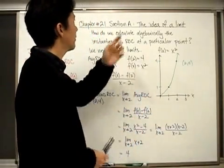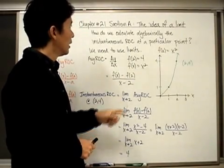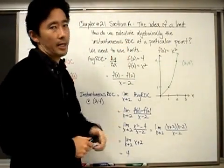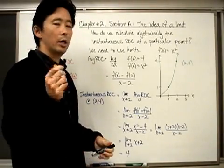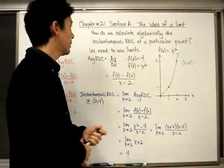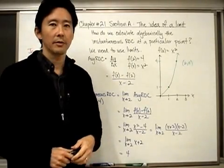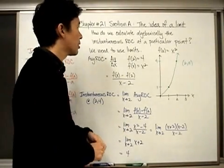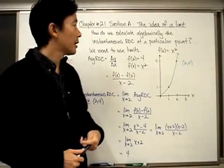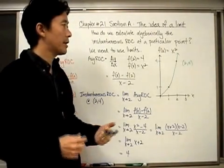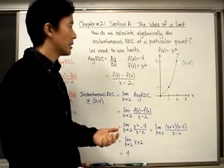Going back to the original question for Section 21A — how do we calculate the instantaneous rate of change? We don't want a best guess; we want to know how to calculate it exactly. What we need to do is use what mathematics calls a limit. Let's look at what we know so we can use limits to calculate the instantaneous rate of change.